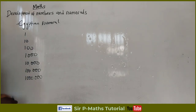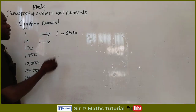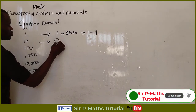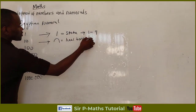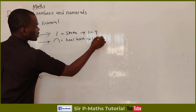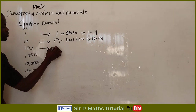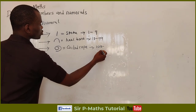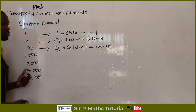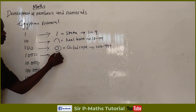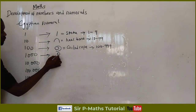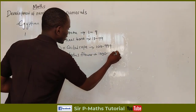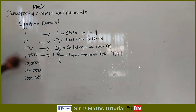With those symbols, the Egyptians were able to read or store information from one to one million. The first symbol is a stroke, used for numbers from one to nine — the units. The second is the heel bone, used for tens, covering numbers from 10 to 99. Next is the coiled rope, used for numbers from 100 to 999. Then for thousands, they used the lotus flower, representing numbers from 1,000 to 9,999.